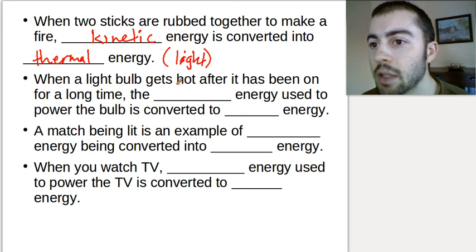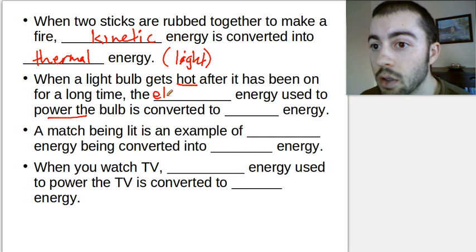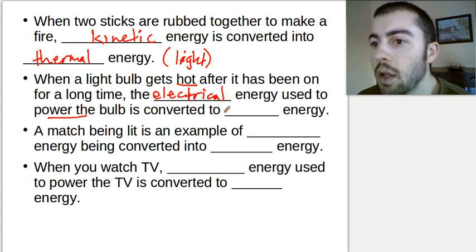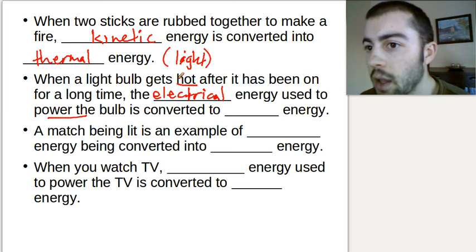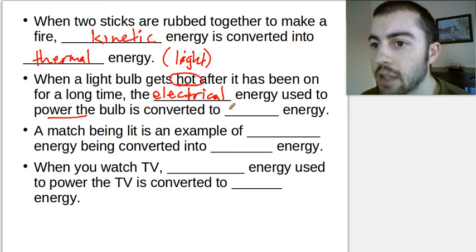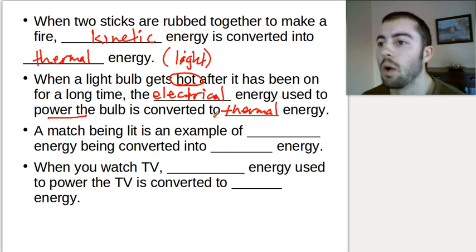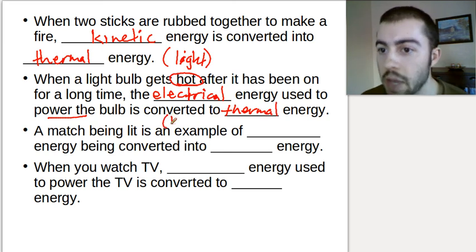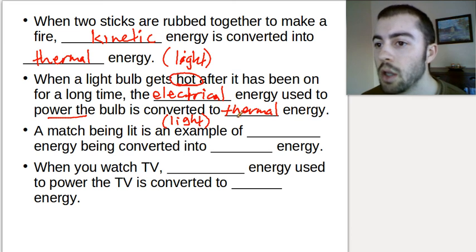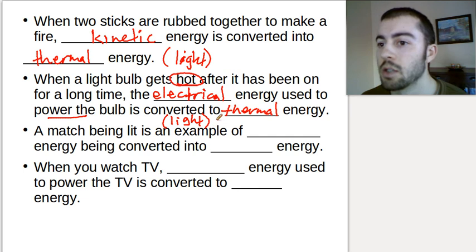If a light bulb gets hot after it's been on for a long time, the electrical energy used to power the bulb is converted into thermal energy — the key word is 'hot.' A light bulb obviously also makes light energy, but in this specific case we're referring to the thermal energy. So that's electrical energy being converted into both thermal and light energy.